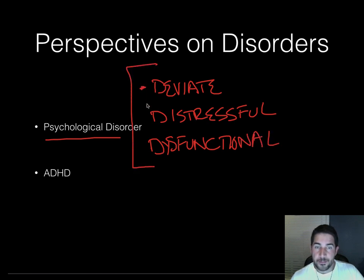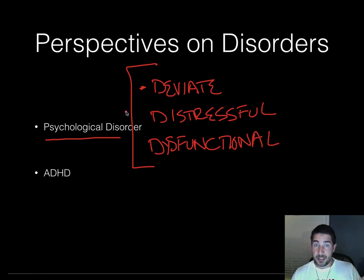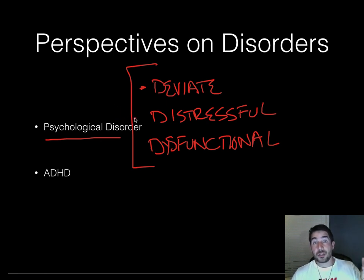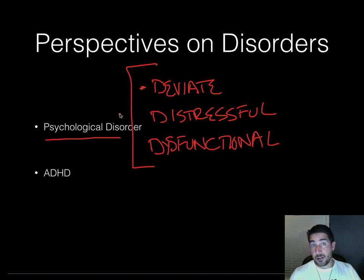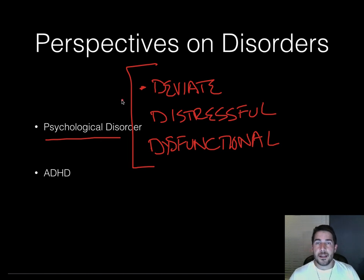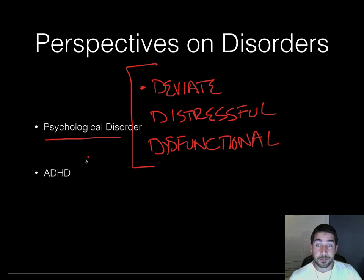Deviant means it has to deviate from the social norms of your society. So a psychological disorder might be something in one society but not another. Depending on how you're supposed to act in that particular culture or society may or may not classify you as having a psychological disorder.